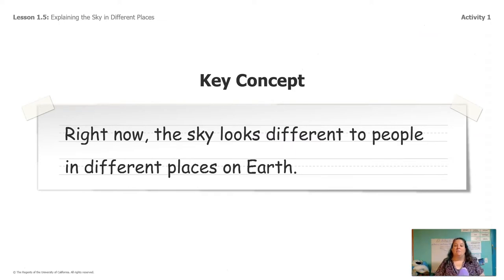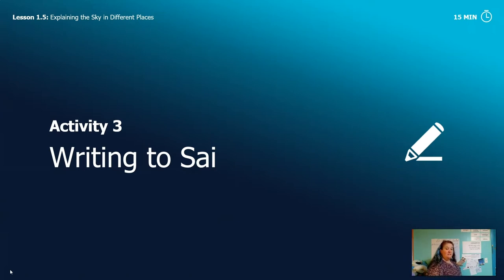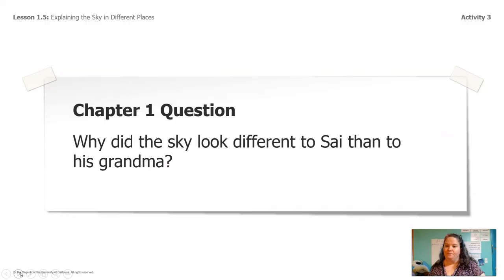This is the big idea: right now the sky looks different to people in different places on Earth — how the sky looks depends on where you live. We did all this work and we finally have an answer to the chapter one question: why did the sky look different to Sai than to his grandma? But we need to communicate that to Sai — we need to tell him our ideas — and we're going to do that by writing.